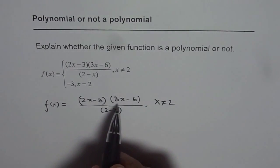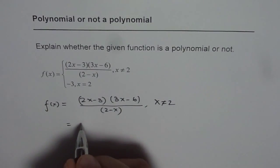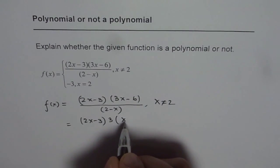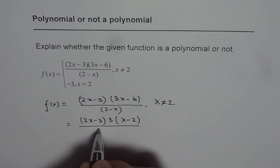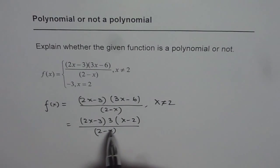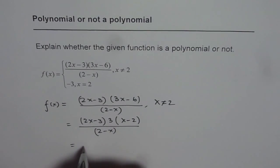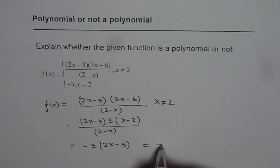So let's simplify this. We can factor 3 here. So we get 2x minus 3, and if we factor 3 we get x minus 2 divided by 2 minus x. Now 2 minus x and x minus 2 can cancel out giving us minus 1. So we are left with minus 3 times 2x minus 3. This could be written as minus 6x plus 9.